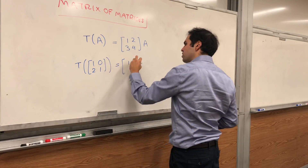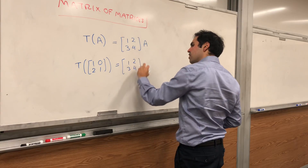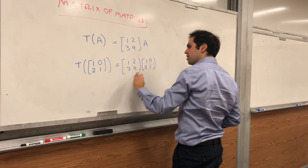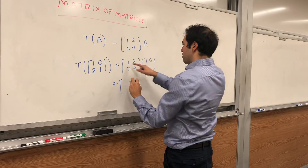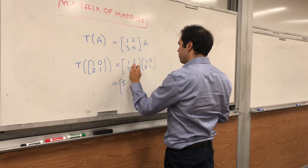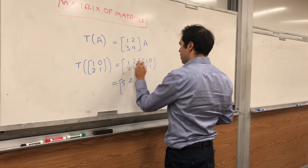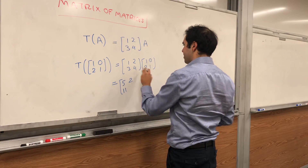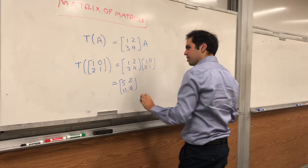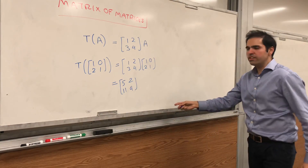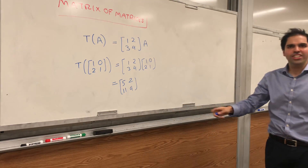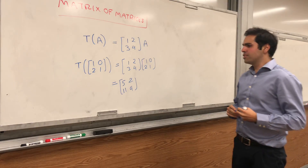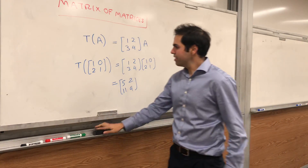Well, that is [1,2,3,4] times [1,0,2,1], and that just becomes [1, 5, 2] — so [5, 2, 3+8=11, 4]. So you see, it's a linear transformation that takes a matrix as an input and spits out a matrix.